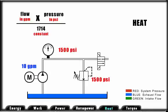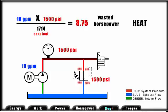For example, if we have 10 gallons per minute going through a relief valve, which has a pressure setting of 1,500 psi, we can calculate the energy being converted to heat.